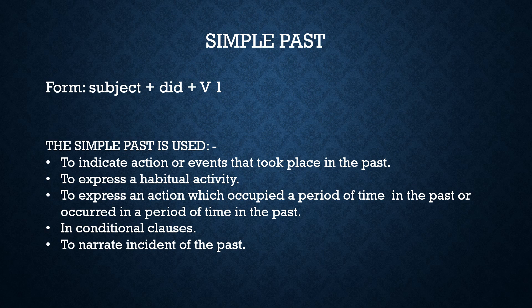Now let's begin the past tense. We make the simple past tense with the subject plus did plus the first form of the verb. It is used to indicate actions or events that took place in the past — for example: 'When did you see him last?' 'I received his letter a week ago.' To express habitual activity: 'He always went to a temple at Diwali,' 'Whenever he went abroad he took his son with him.' It is also used for an action that occupied a period of time in the past — for example: 'My father worked in that bank for 10 years,' 'He lived in this house for two years.'